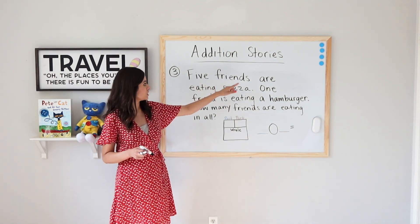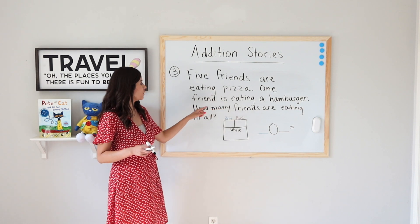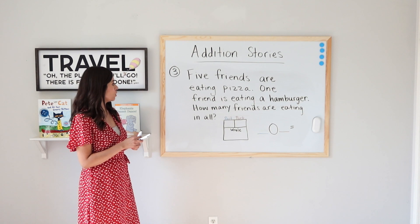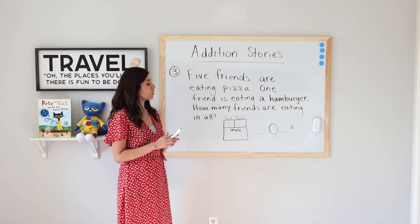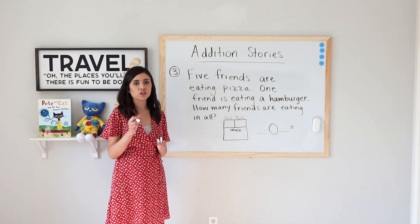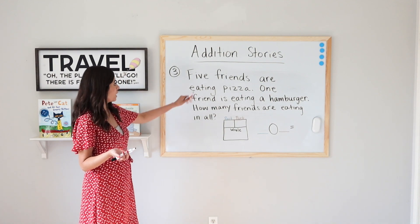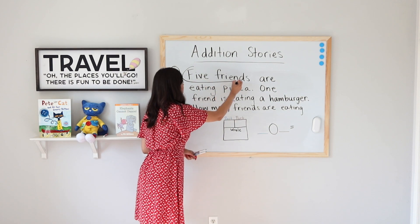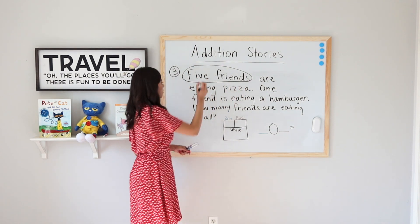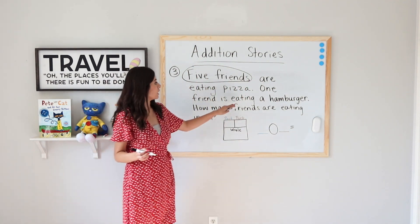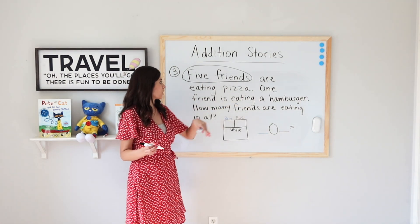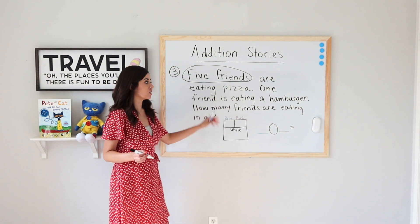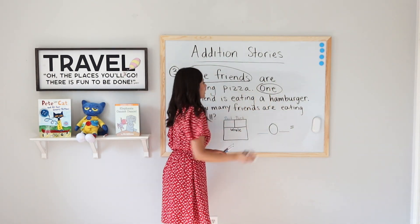Let's try another example. Number three: five friends are eating pizza, one friend is eating a hamburger. How many friends are eating in all? Once again, I'm going to go back and circle what I already know. How many friends are eating pizza? Five. So go ahead and circle five friends. Now let's see how many friends are eating a hamburger — it says one friend is eating a hamburger. So let's go ahead and circle one friend.